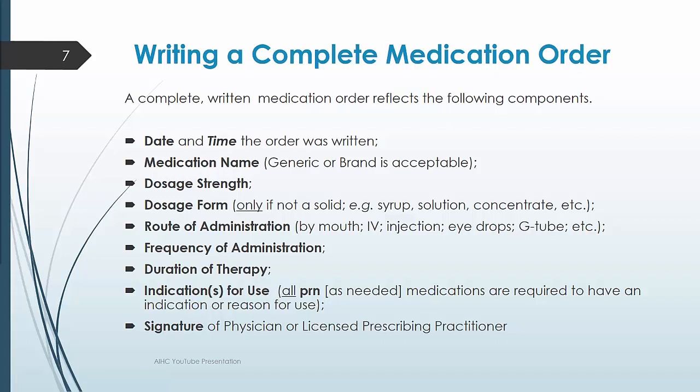A complete written medication order always contains the following components in the patient's medical record: date and time the order was written, medication name, dosage, strength, route of administration, frequency of administration, duration of the therapy, and indications for use. All PRN medications are required to have an indication or reason, and an appropriate authentication or signature of the physician, advanced practice nurse, non-physician provider, or NPP.